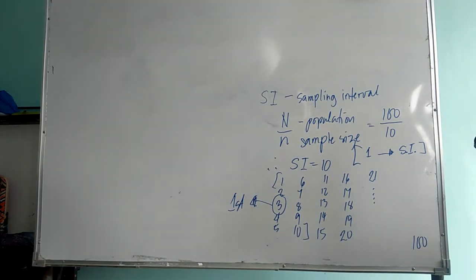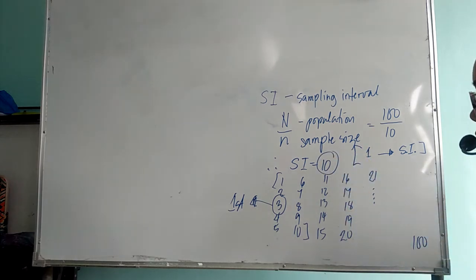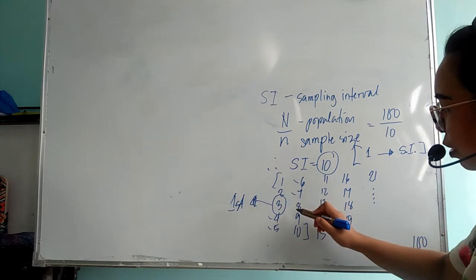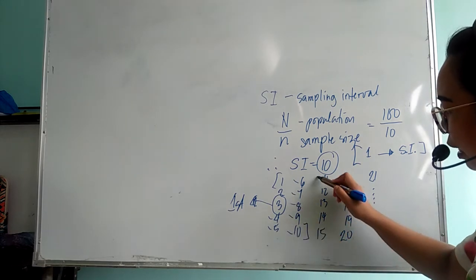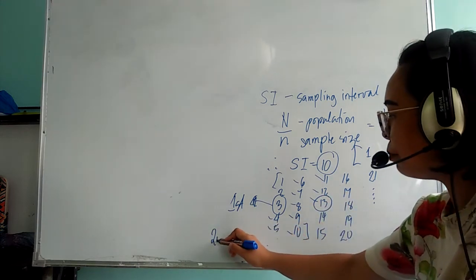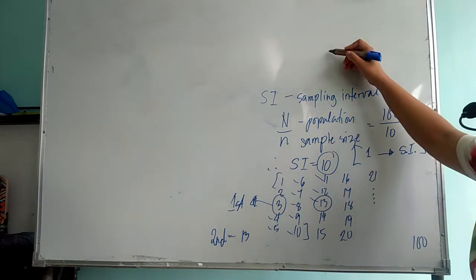For the second sample, you have to count 10 since your sampling interval is 10: 1, 2, 3, 4, 5, 6, 7, 8, 9, 10. So your second sample will be 13.